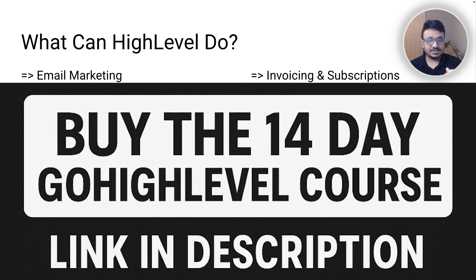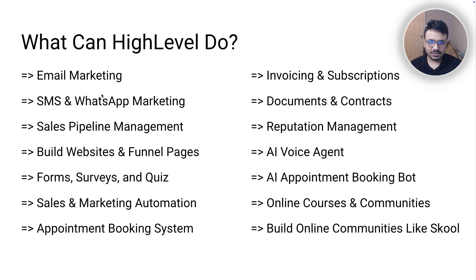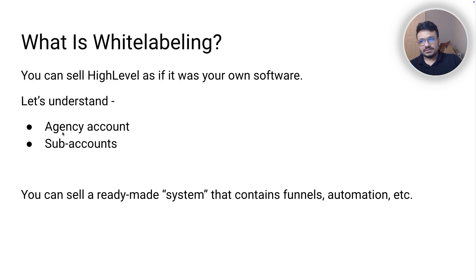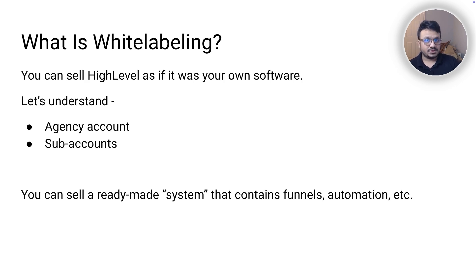Let's talk about white labeling. High Level is something you can sell to other people. You get a subscription with all these features and you can sell them as if it were your own software to clients. When you subscribe and get a High Level account, you get an agency account and you can create multiple sub-accounts. Sub-accounts are where all the features are available — you can use them and sell sub-accounts to other businesses.